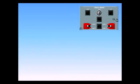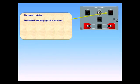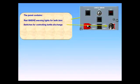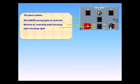The panel contains red smoke warning lights for both bins, switches for controlling bottle discharge, agent discharge lights, and a one-hour warning advising discharge of the second fire bottle.